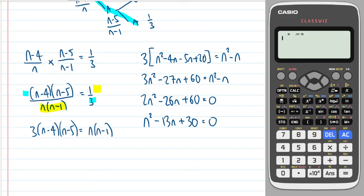And then two numbers that times together to make 30 and add to make negative 13. Let's see, negative 15 and positive two... no that's not right either. n minus three and n minus 10, that will do the job.